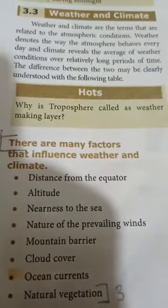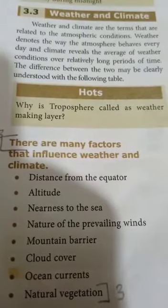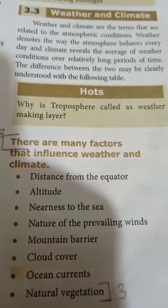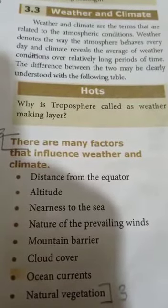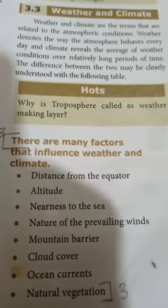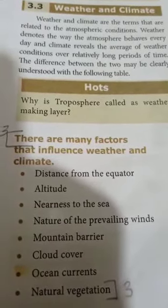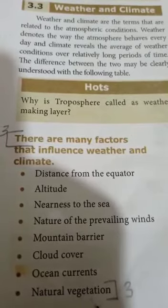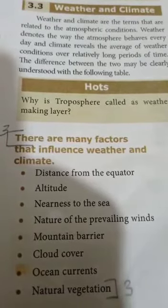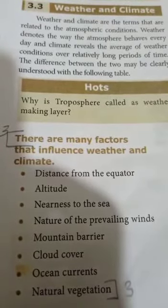The fifth factor is mountain barriers. Barriers means obstacles. The location of mountains influences the climate of a place. The mountain chains act as natural barriers to the wind.